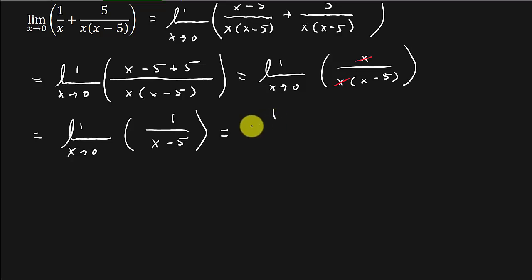Now let's just plug the 0 in. We get 0 minus 5, which is 1 over negative 4. So we get negative 1 fourth as our answer.